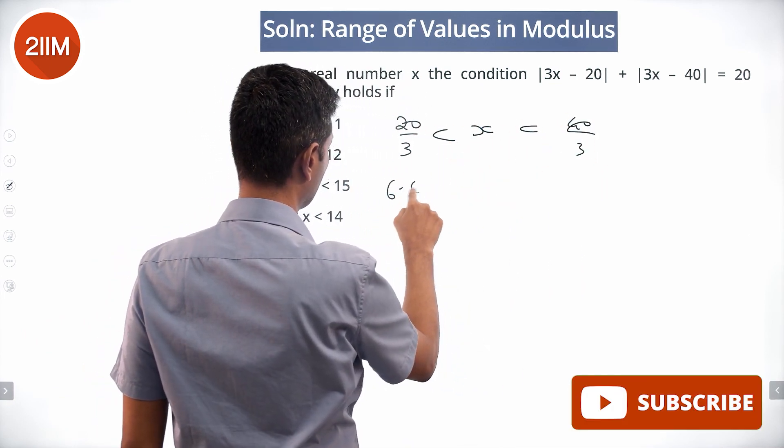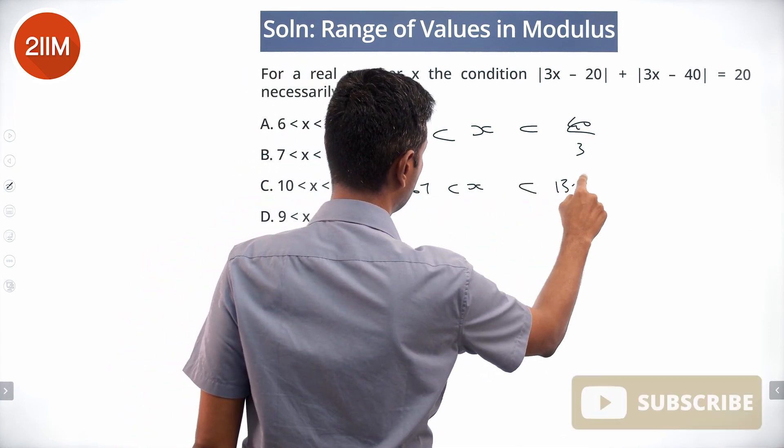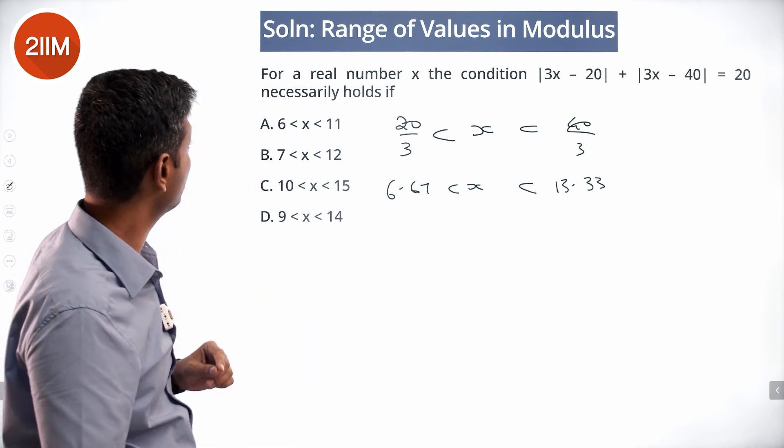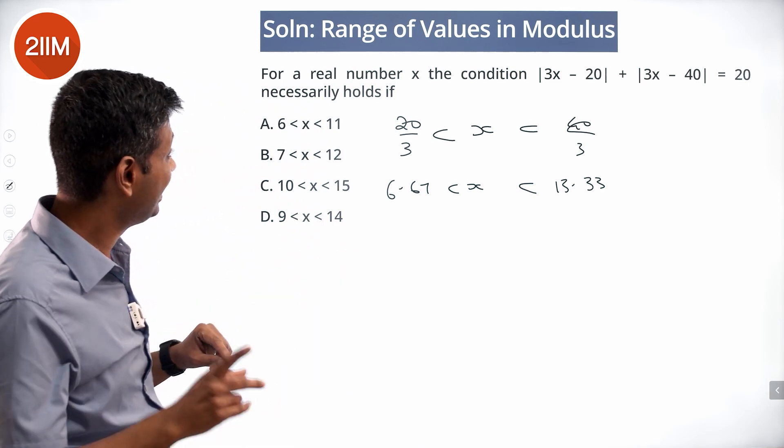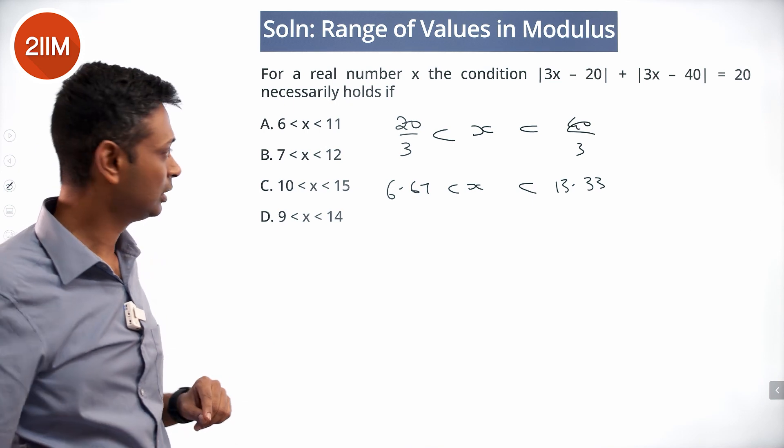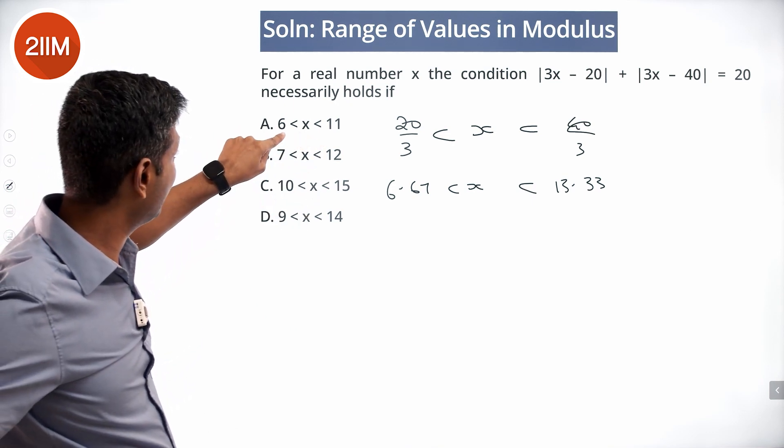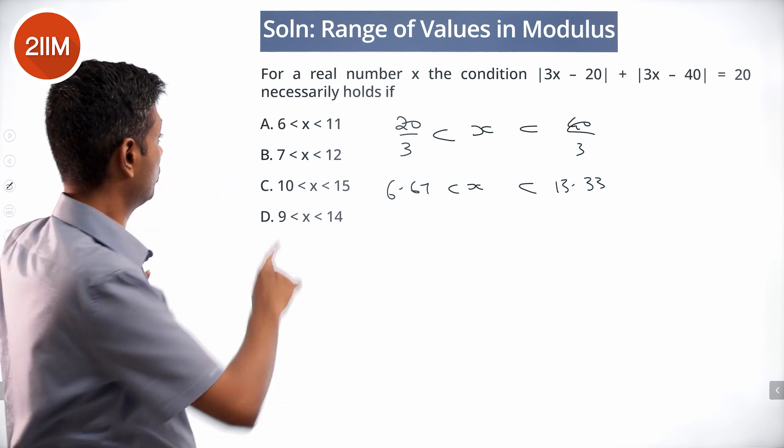20 by 3 less than x less than 40 by 3. 6.67 less than x less than 13.33. Obviously, that is not there in the choices. So the question says for a real number x necessarily holds if 6 less than x less than 11 won't work. Because x equal to 6.1, it won't work.